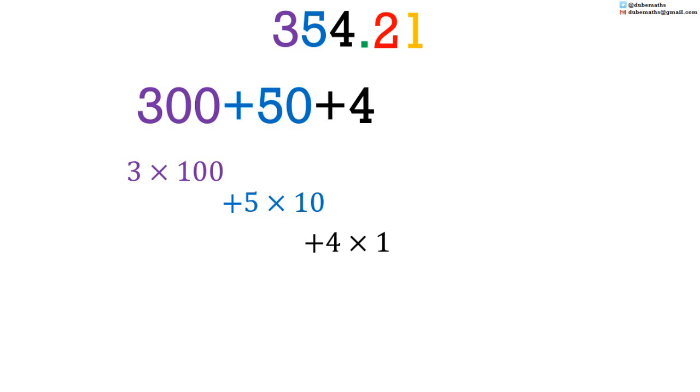In terms of multiplying by a number, we have to maintain the pattern. Each number in turn, from left to right, is multiplied by a number 10 times less than the previous. 3 is multiplied by 100, 5 is multiplied by 10, 4 is multiplied by 1. What is 10 times as small as 1?